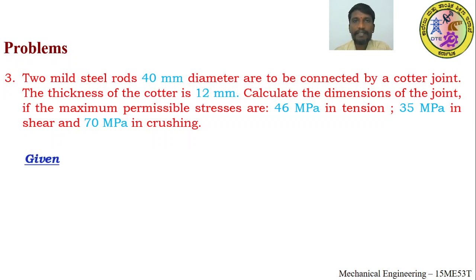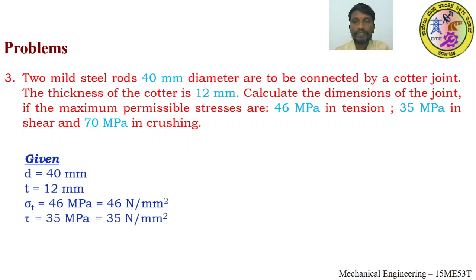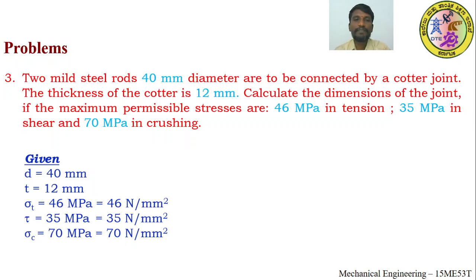Given: diameter d = 40 mm, thickness of cotter t = 12 mm, permissible tensile stress σ_t = 46 MPa (46 N/mm²), shear stress τ = 35 MPa (35 N/mm²), and crushing stress σ_c = 70 MPa (70 N/mm²).